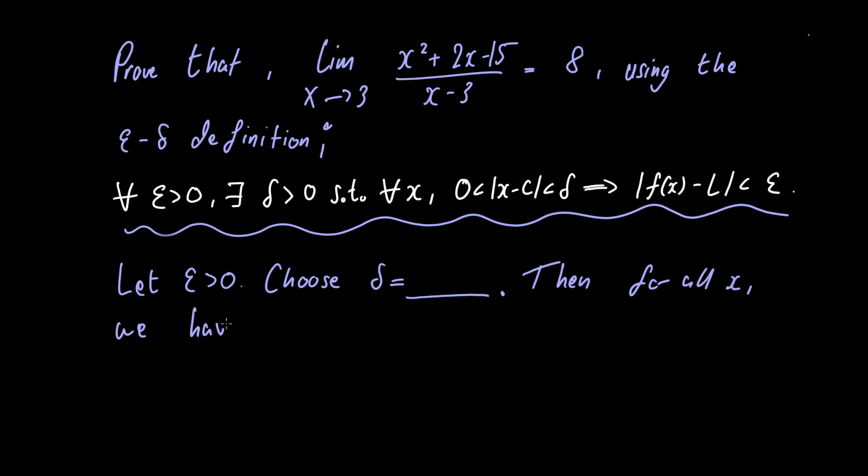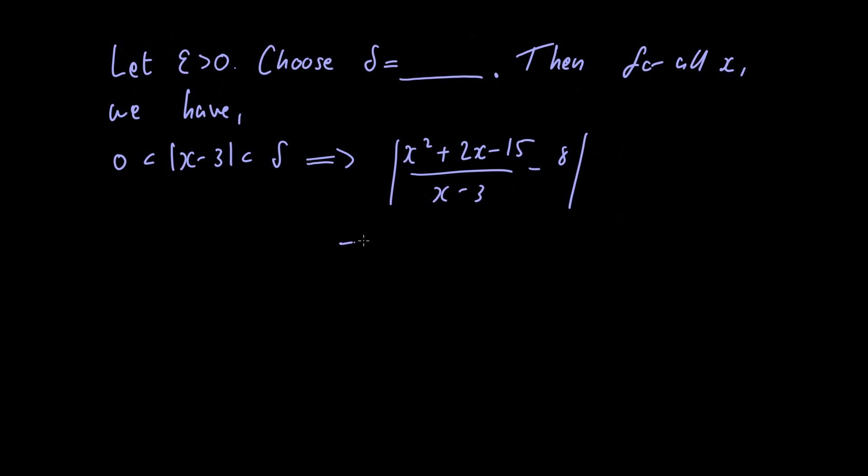Then for all x we have 0 less than the absolute value of x minus 3 less than delta implies that the absolute value of x squared plus 2x minus 15 divided by x minus 3 minus 8.